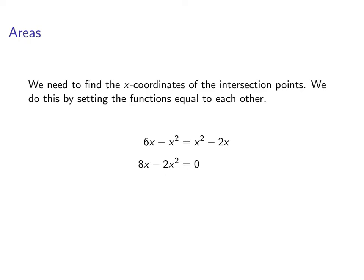We'll put everything to one side, we'll have 8x minus 2x squared equals 0. Factoring out the 2x, we'll get 2x times 4 minus x equals 0.